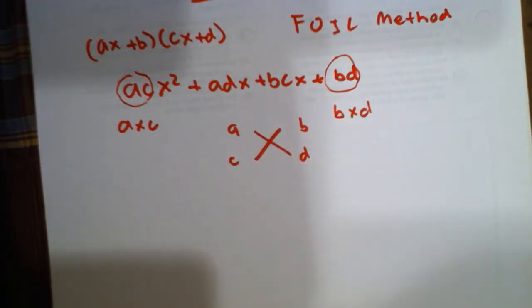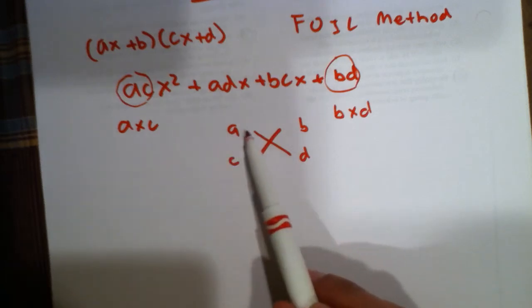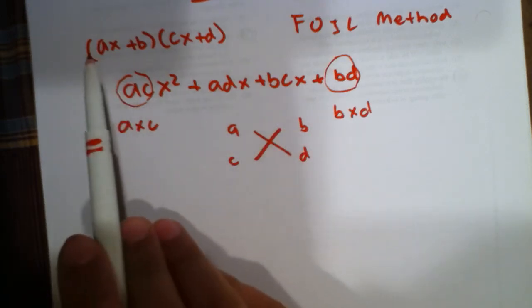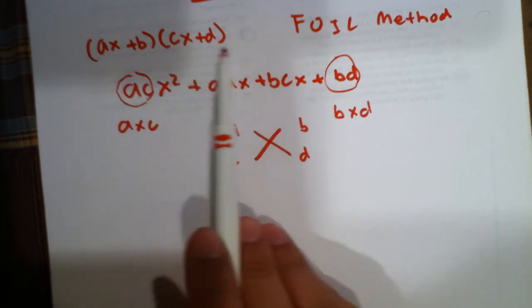Now, how this cross will work is that it will read ax plus b and cx plus d, which is basically, as you can see here above, ax plus b, cx plus d.